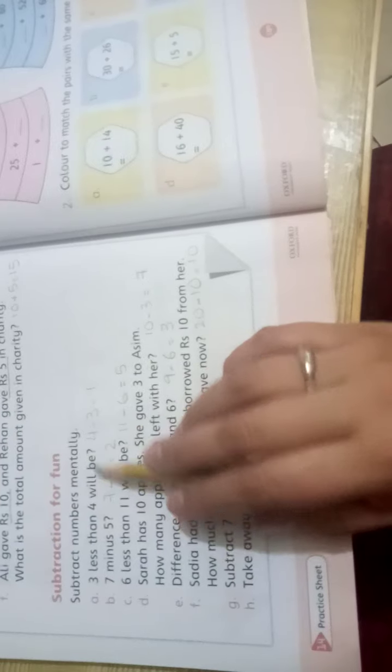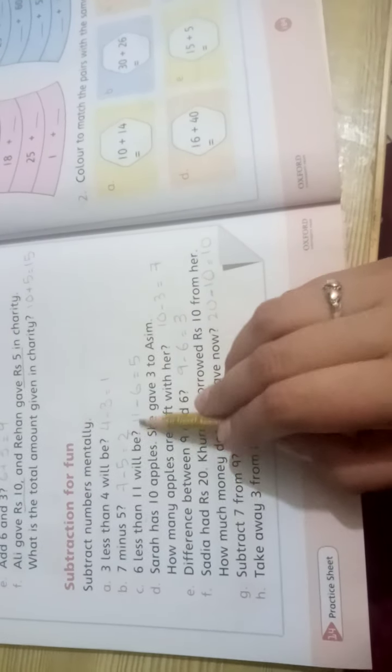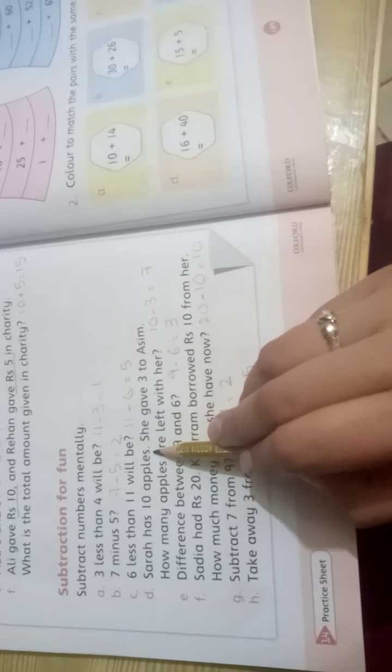Next, subtraction. This will also be verbal. 3 less than 4 will be 4 minus 3 equals 1. 7 minus 5 equals 2. 6 less than 11 will be 11 minus 6 equals 5. Sarah has 10 apples and she gave 3 to Asim. How many apples are left? 10 minus 3 equals 7 apples left.